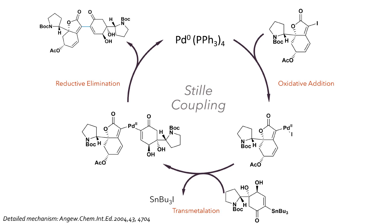A Stille coupling reaction was used to join the two sides of the dimeric structure. Palladium(II) was used as the catalyst, as with the stannylation reaction. In a simplified explanation of the mechanism, the catalyst first undergoes oxidative addition into the carbon-iodine bond of the substrate. The nucleophilic partner then reacts with the palladium(II) complex, which undergoes transmetallation to eliminate tributyltin iodide and leave both coupling partners bound to the palladium center.